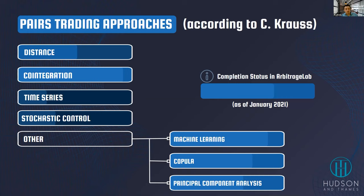There is a great paper by Krauss that structures pairs trading. All cited papers are linked in my presentation on Google. According to Krauss, there are five main approaches: distance approach, cointegration, time series, stochastic control, and 'other' — which breaks into machine learning, copula, and principal component analysis. Here is a general completion status of how much of each approach is currently implemented in the ArbitrageLab package.